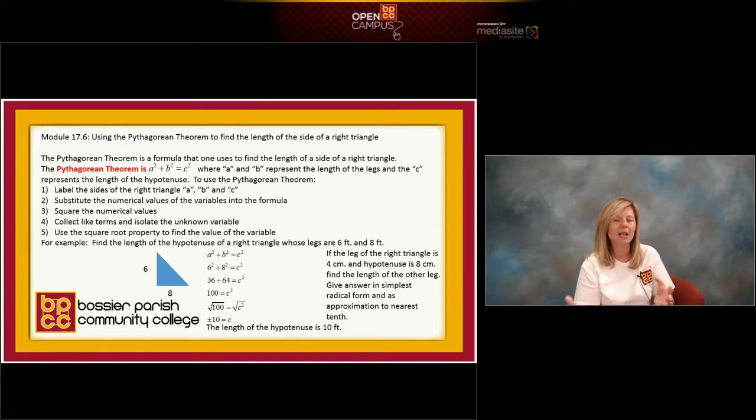Once we get our variable isolated, it's going to have a square on it, so we're going to do the square root. But because we're finding a length of a side, we know we're not going to have both a positive and negative answer. We're only going to use the positive answer.